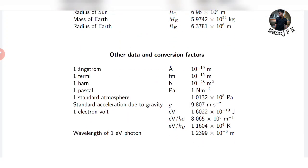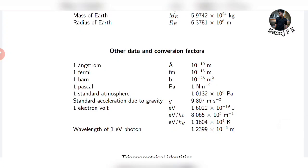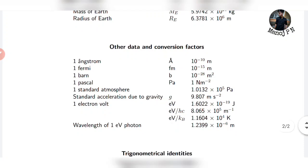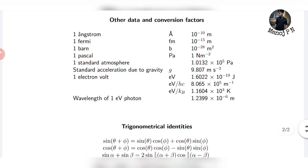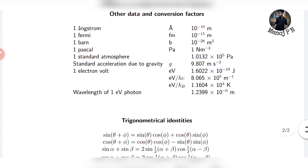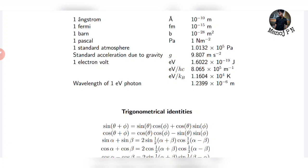This conversion data and conversion factors are most important. One angstrom is 10 to the power of minus 10 meters. One fermi is 10 to the power of minus 15 meters. One bar is 10 to the power of minus 28 meter squared. One standard atmosphere is 1.01325 × 10 to the power of 5 pascals. Standard acceleration due to gravity, one electron volt — 1 eV divided by hc and 1 eV divided by kb — these conversions give values 8.065, 1.160, and 1.602 respectively.